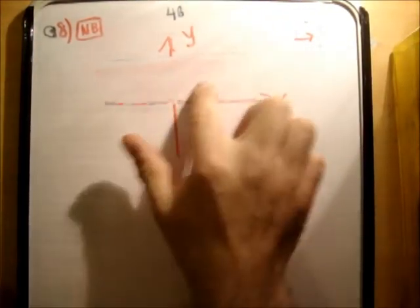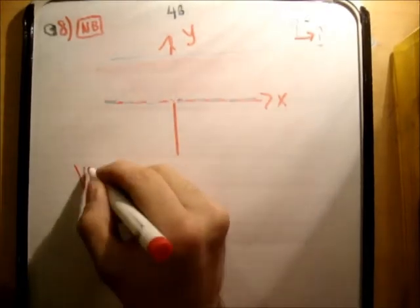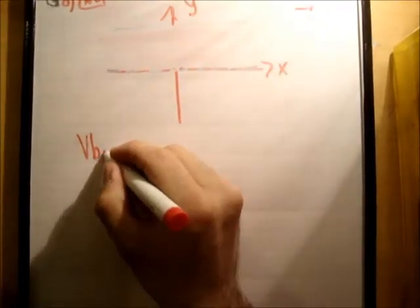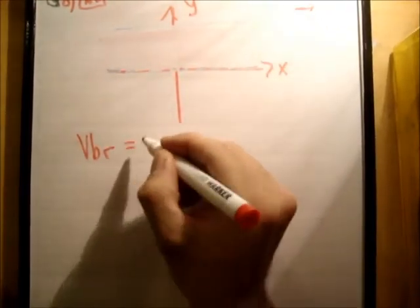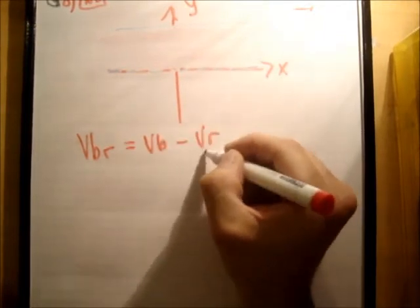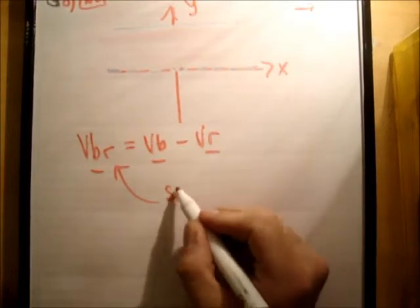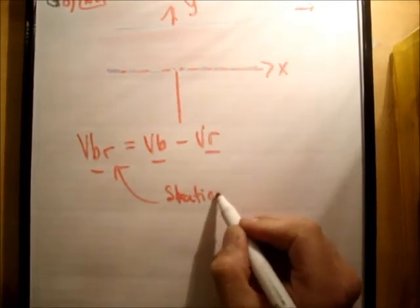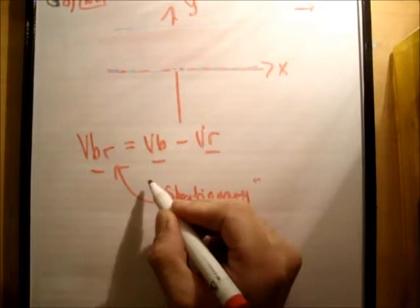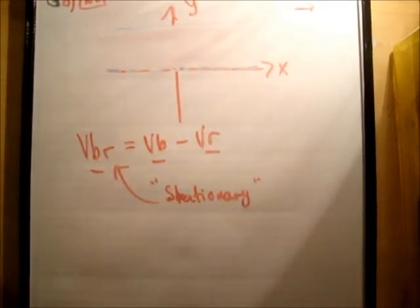The first thing I'm going to do is analyze what does VB relative to the water mean. It means VB minus VR mathematically, but it means that the river is stationary. It's how you would cross the river if there was a lake for example and you didn't have to take into account the fact that there was a current.